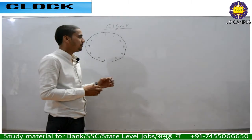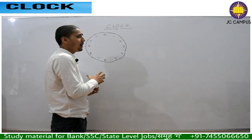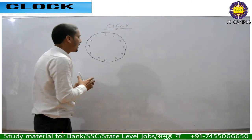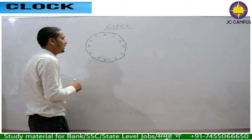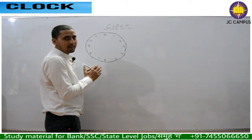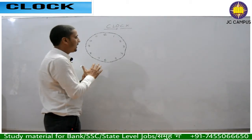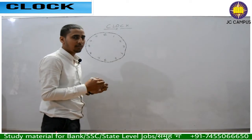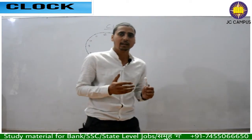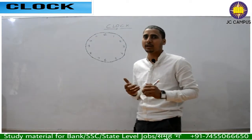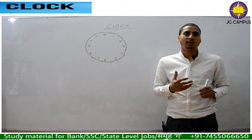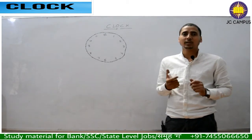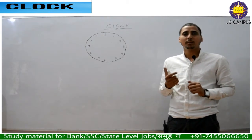You all have seen a clock. We will talk about analog clock only, not digital clock. In our clock there are 3 types of hands: minute hand, hour hand, and second hand — meaning the second hand, the hour hand, and the minute hand.